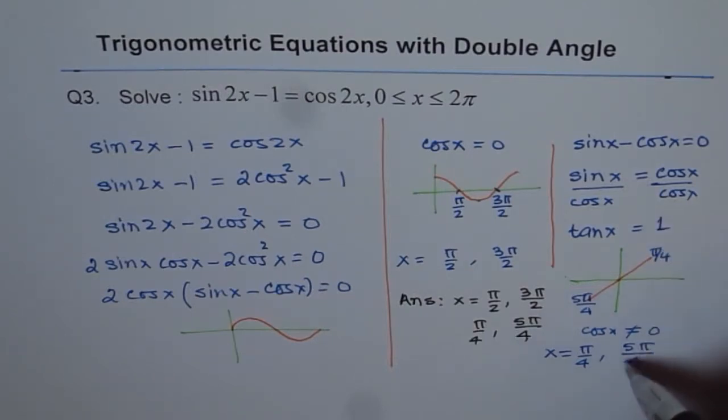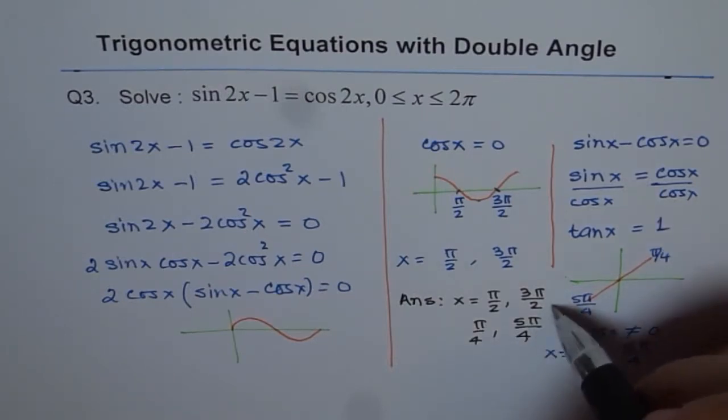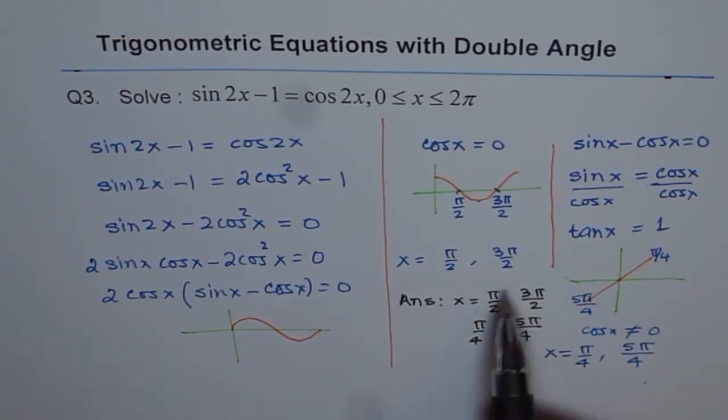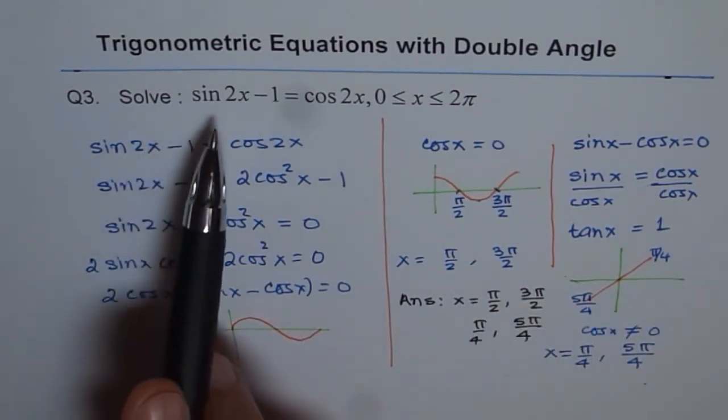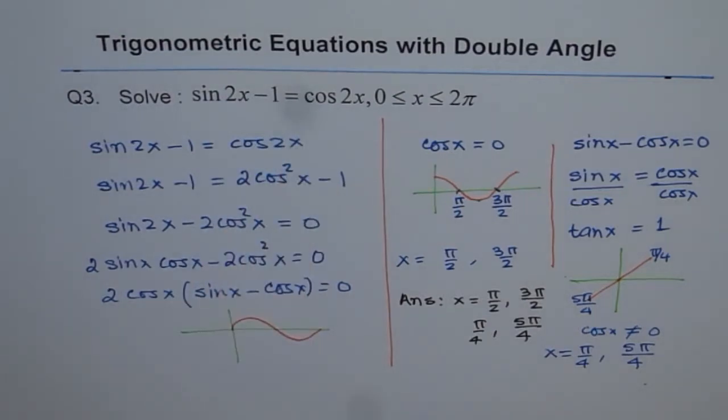We don't have just two solutions here; we have all four solutions. Since these four values, if you plug them back into the equation, make sense, we get the right answer. Within the domain of 0 to 2π, x equals π/2, 3π/2, π/4, and 5π/4. Thank you.